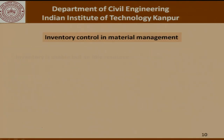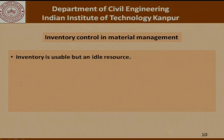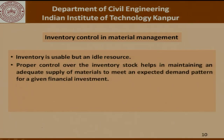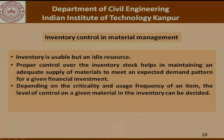Inventory control and material management: we look at inventory as a usable but ideal resource. Proper control over inventory stock helps in maintaining an adequate supply of materials to meet an expected demand pattern for a given financial investment. Depending on the criticality and usage frequency of an item, the level of control on a given item in the inventory can be decided. Not each item procured or used in a construction project is equally critical, equally costly, or used to the same extent. Different levels of control and caution will need to be exercised in procurement.